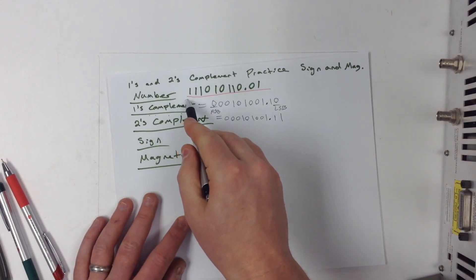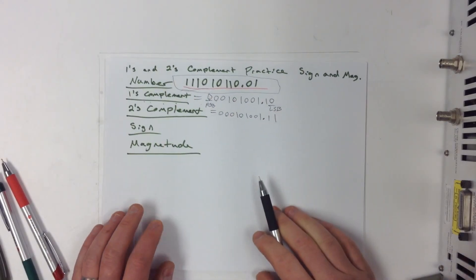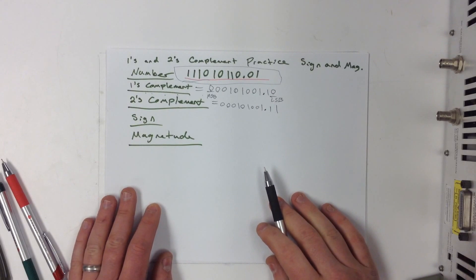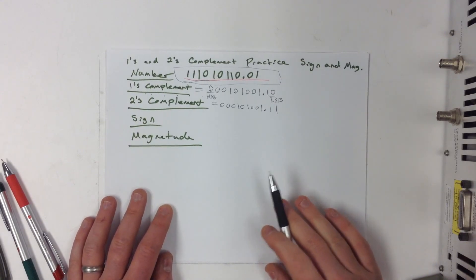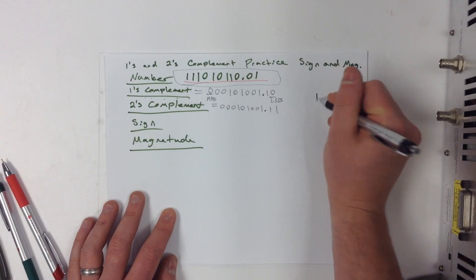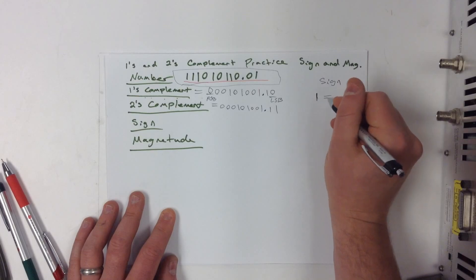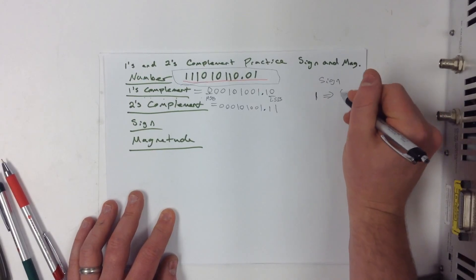Now, given the number here, let's go ahead and find the sign and magnitude. Say that this number was in a sign and magnitude form. We know that if the sign is a 1, so for sign, if it's a 1, that means that it's a negative number.